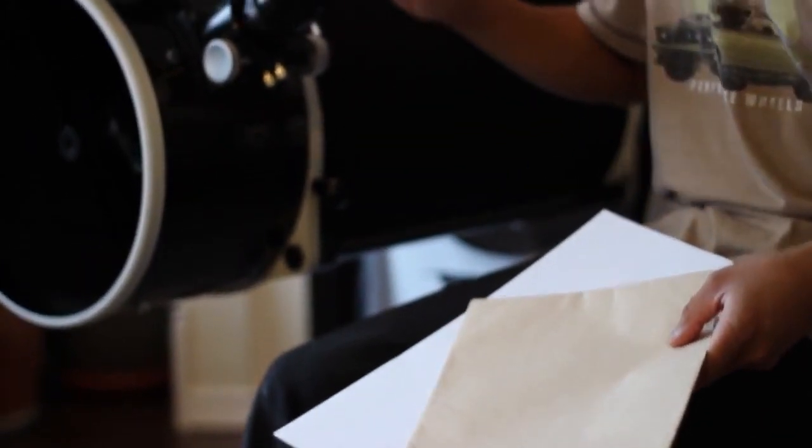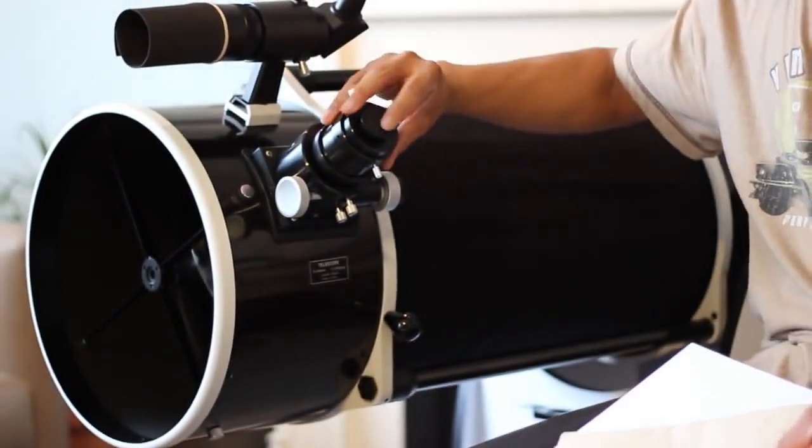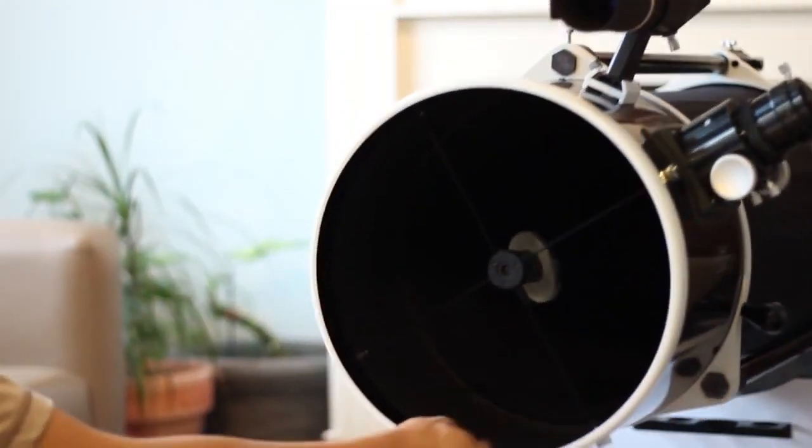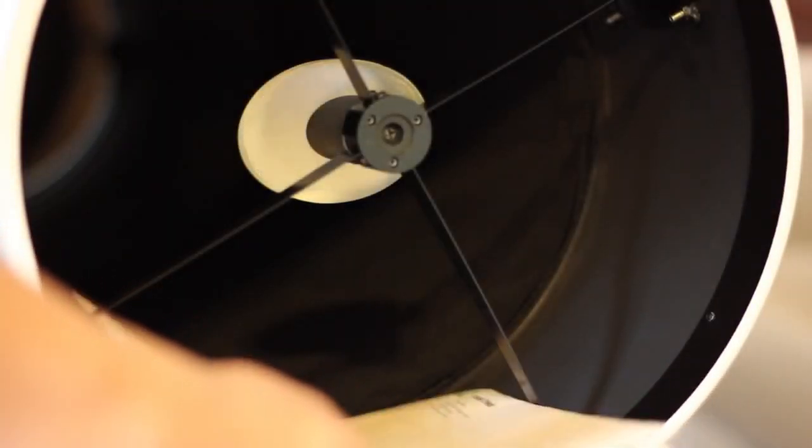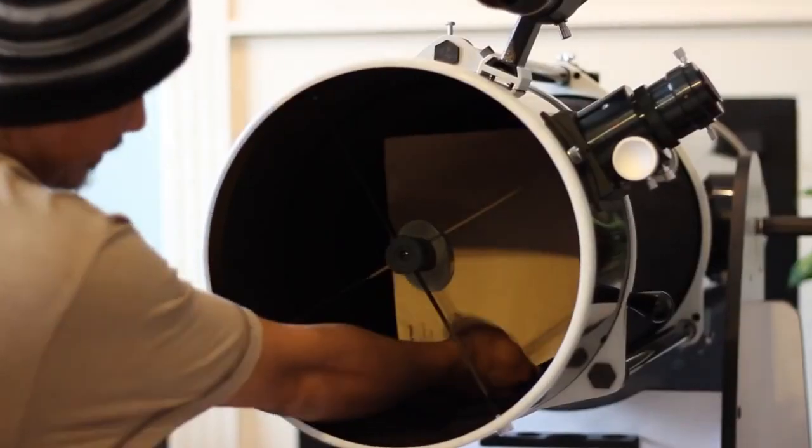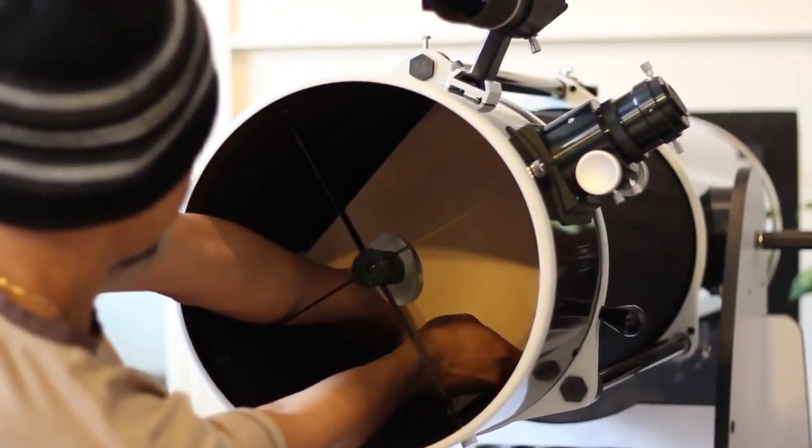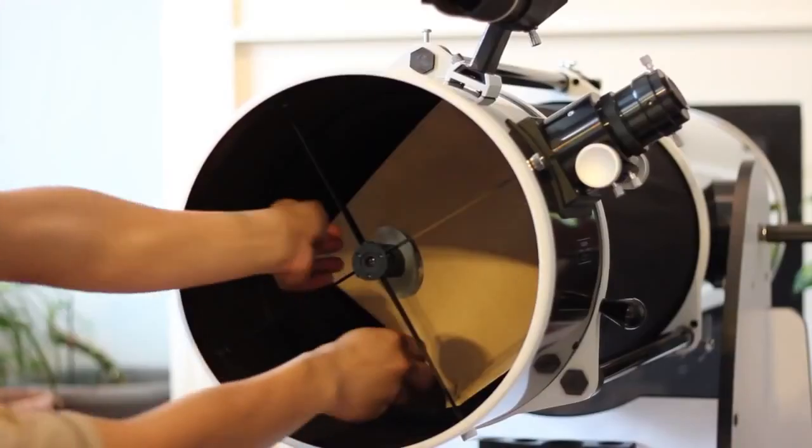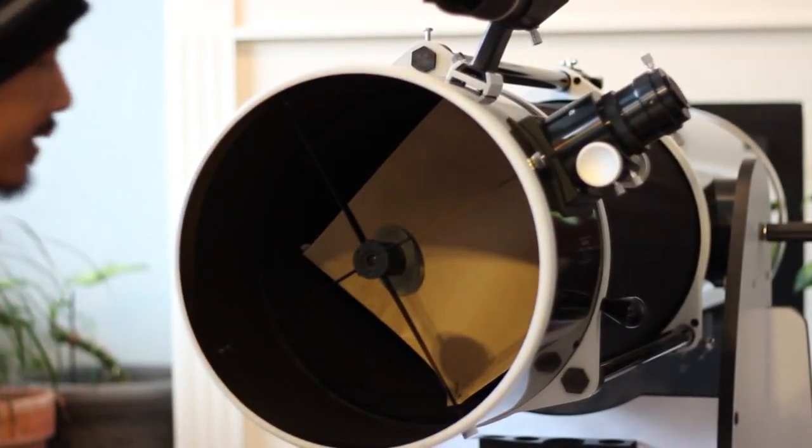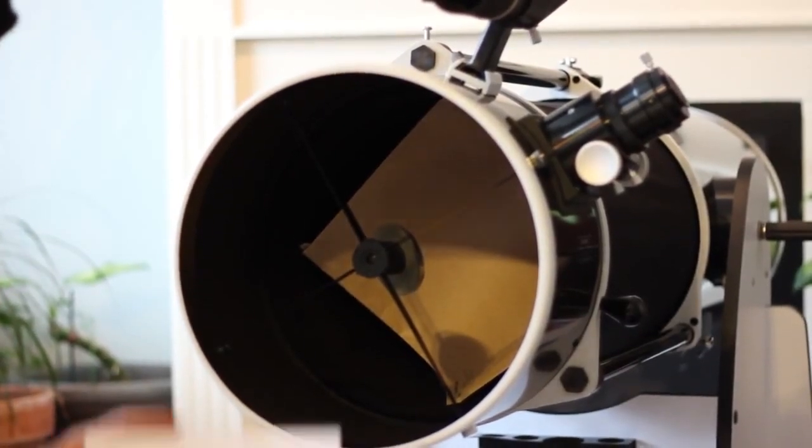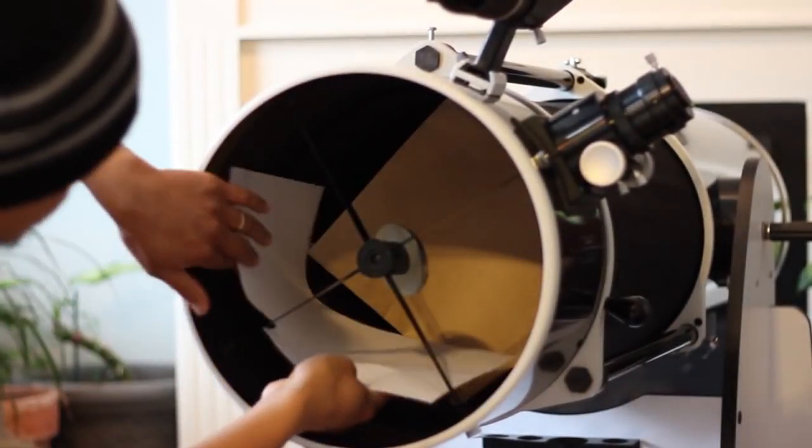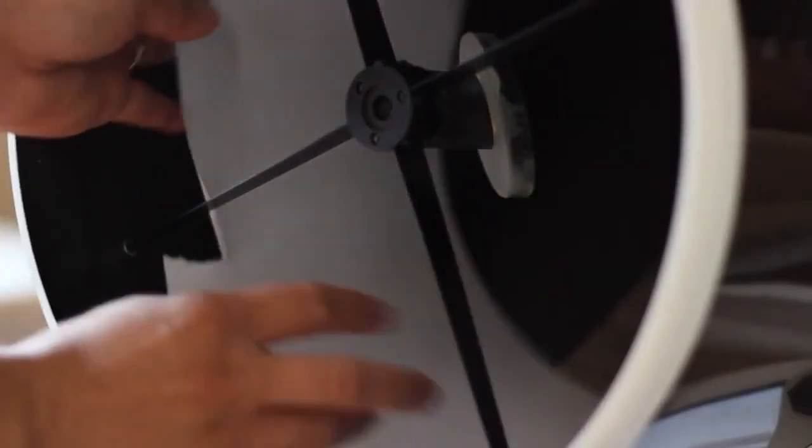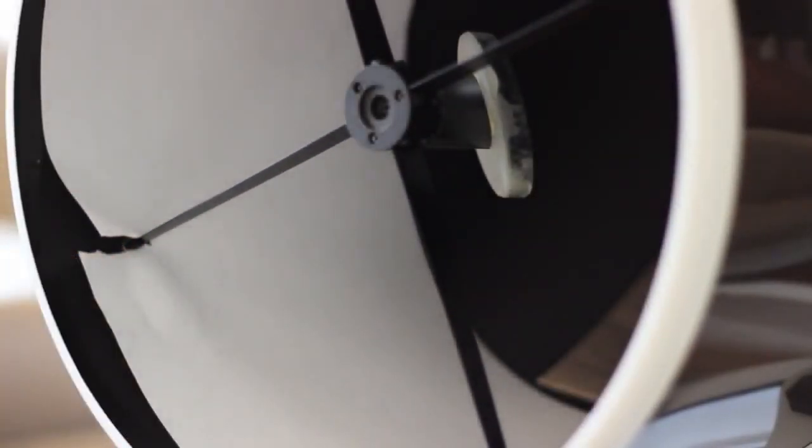The first step is to insert the collimation cap into the focuser tube opening. And then I am going to insert the brown sheet inside and face it out this way. The goal is just to block the primary from being seen by the secondary and to avoid any distractions. And I am going to insert a white sheet against the wall here, behind the secondary mirror, which should create more contrast when I look through the collimation cap.